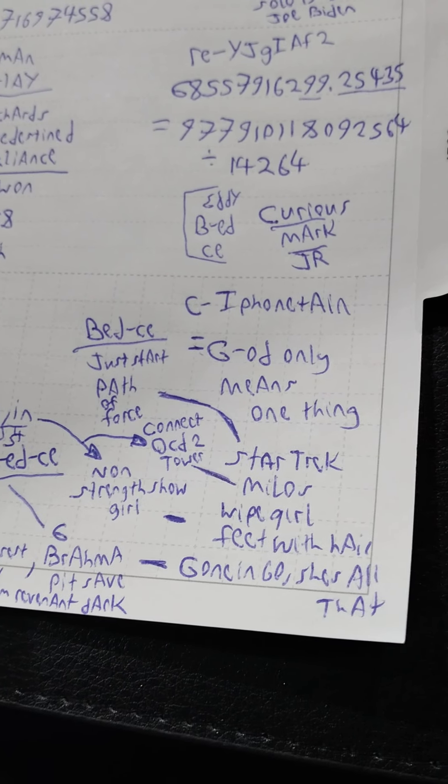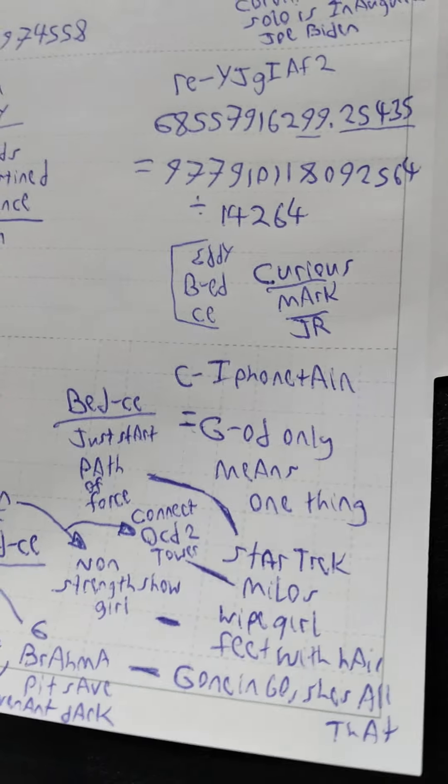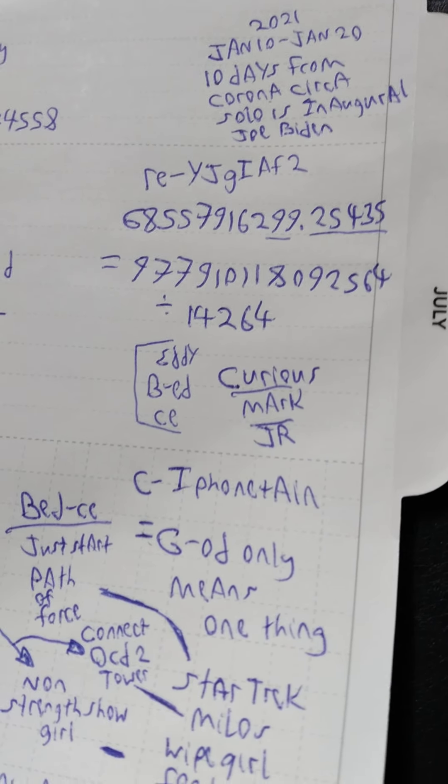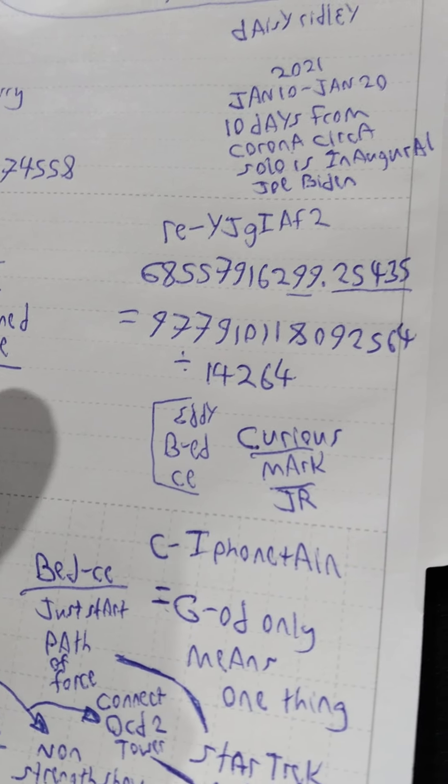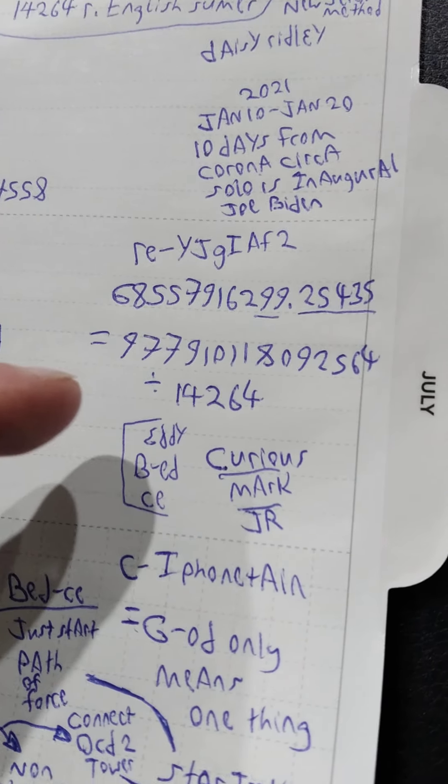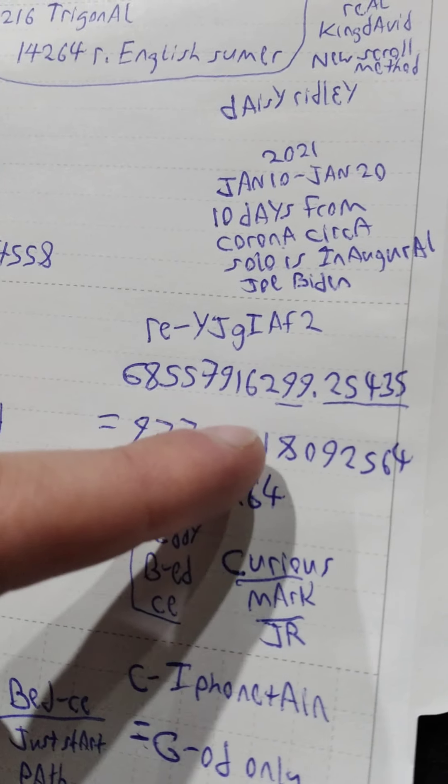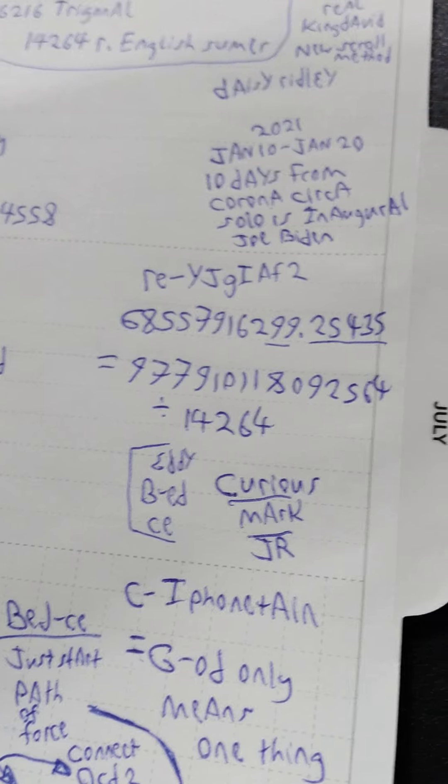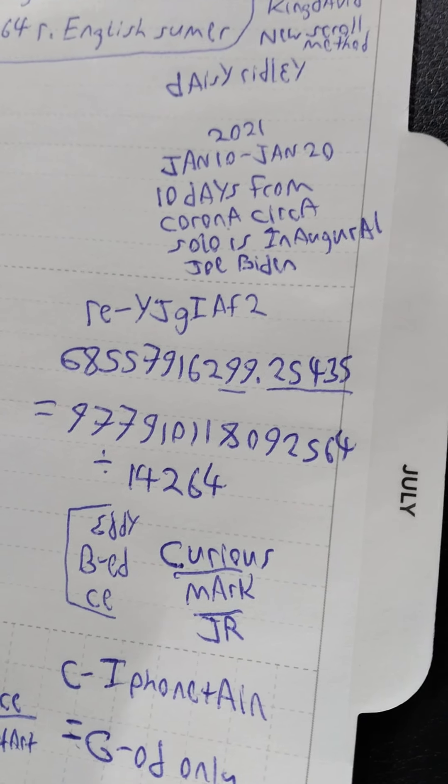Also you get curious Mark or curious junior Mark. Which is some of that Legion and fallen angel talk stuff and probably really modified cause it's a game sort of thing. Then this is Eddie bed key. For that one, the Eddie and instead of the 54. So then all this here, the front of it is re Y, J G F, B. So I thought, I'm going to write this 10 days from Corona circus solo is inaugural Joe Biden just to see, like this could be what it was. And that was the re, but for one thing, she would know if that was her or not.